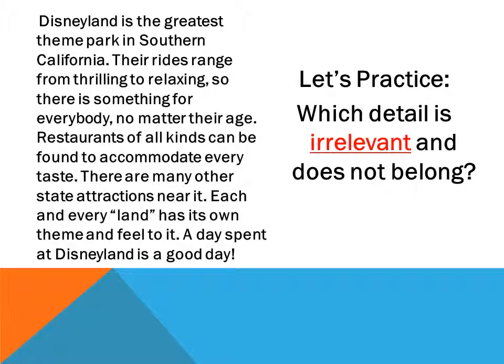Read this passage silently as I read it aloud. After reading it, determine which detail is irrelevant. Disneyland is the greatest theme park in Southern California. The rides range from thrilling to relaxing, so there's something for everybody, no matter their age. Restaurants of all kinds can be found to accommodate every taste. There are many other state attractions near it. Each and every land has its own theme and feel to it. A day spent at Disneyland is a good day. Which detail is irrelevant? You should have stated many other state attractions are near it does not belong in this paragraph.